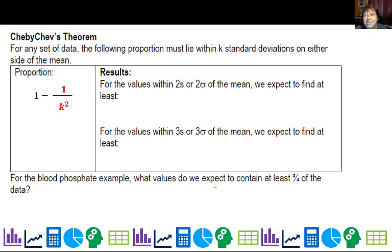Well, I'm going to go one minus one over two squared is one minus one fourth, or three fourths, or basically 75% of the data is within two standard deviations of the mean.